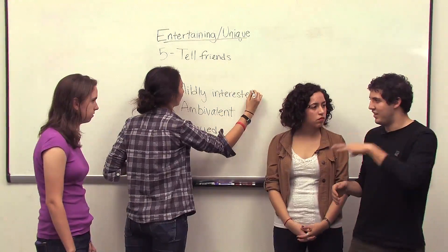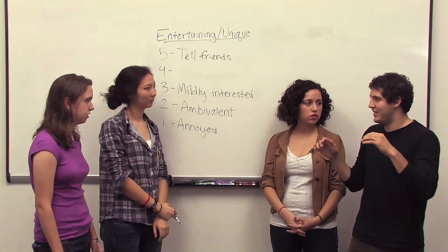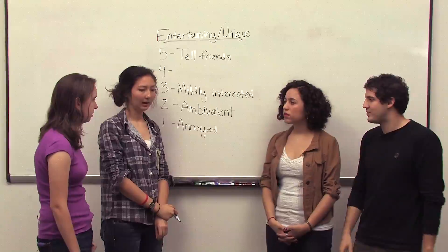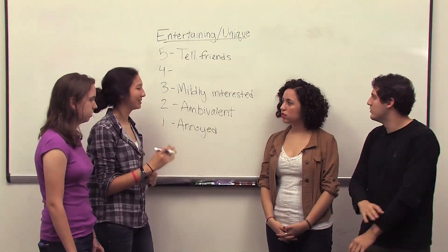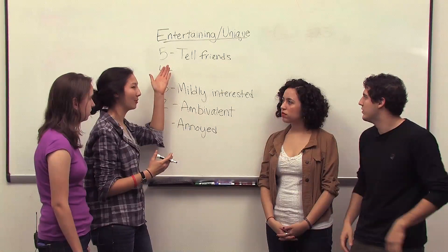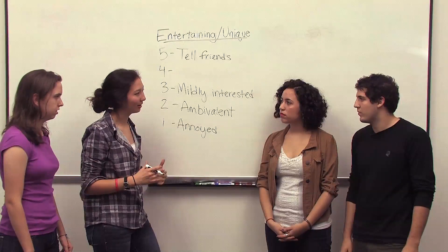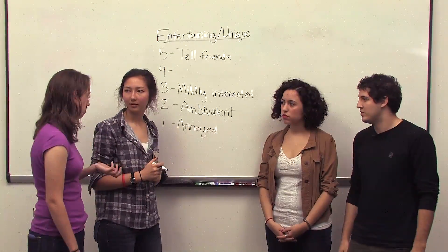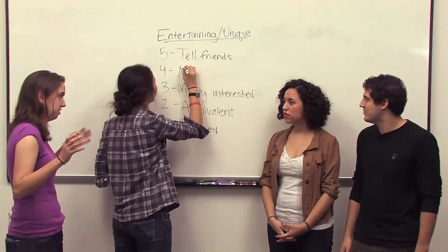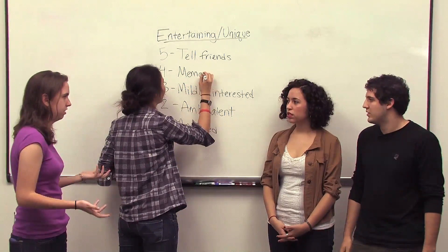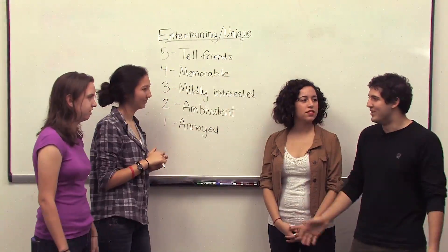So we have mildly interested at 3 and 'tell your friends' at 5. What's in the middle at 4? I think if the device really sticks out in your mind — maybe you're not quite as enthused as someone who wants to tell their friends, but you have a really strong memory of it. So 4 means our device is memorable. It's not 'oh my gosh it's so exciting,' but it's something that's going to stay with you — later on you'll think back and say, 'that was so cool.'